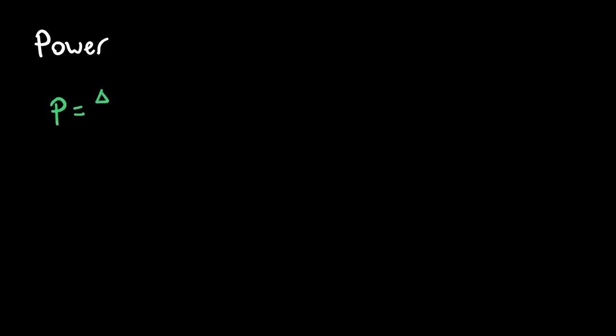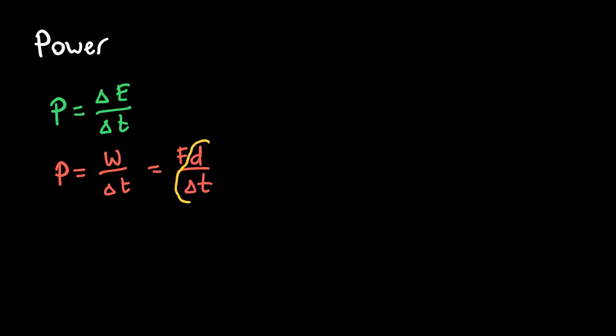Lastly, let's talk about power. We've defined power as being equal to a change in energy over a change in time — delta E divided by delta T — where delta E is the amount of energy converted and delta T is the time it took. Another way of writing this is power equals work divided by time. Since work equals force times distance, we can write F times D divided by delta T. Recognizing that D divided by delta T is velocity, power also equals force times velocity.